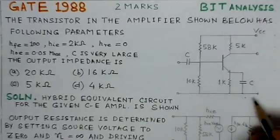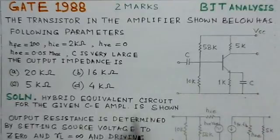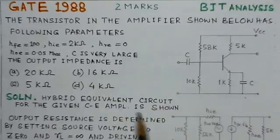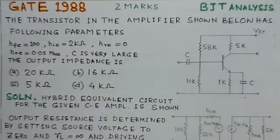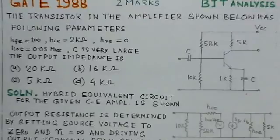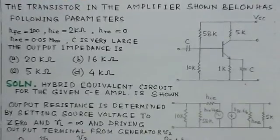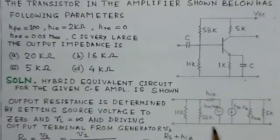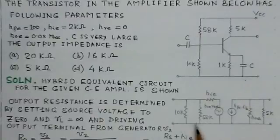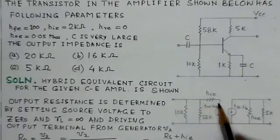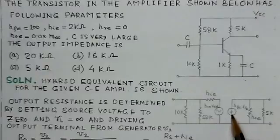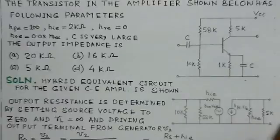So what we do is draw the hybrid equivalent circuit for the given common emitter amplifier. This is the hybrid equivalent circuit. HIE is here, the voltage source is HRE VCE, then current source HFE IB, and HOE. This is a complete hybrid parameter circuit.